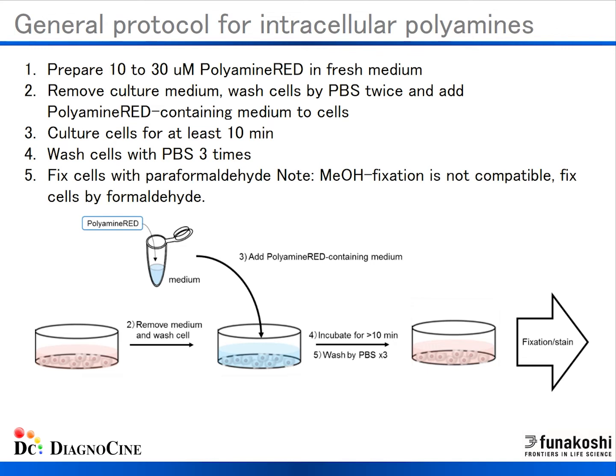You remove cell culture medium from the cells, wash cells twice with PBS, and add polyamine red-containing medium to cells. You then incubate for a minimum of 10 minutes. After the 10-minute incubation, wash the cells with PBS three times to remove unreacted polyamine red stain. Finally, fix cells and visualize using rhodamine filters.